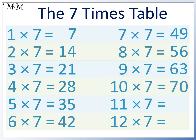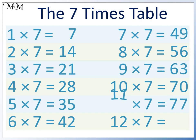10 times 7 equals 70. When we times by 11, we repeat the digit 7: 77.